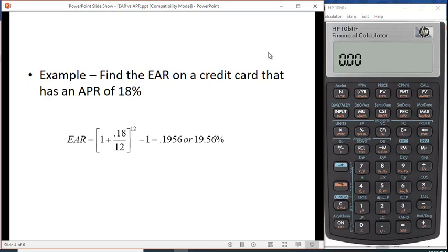This is also the case when you look at things like credit cards. Lots of credit cards have an APR of, for example, 18%—that's 1.5% per month times 12 months. But what's the effective rate that you actually pay? It's (1 + 0.18/12)^12 - 1. Now you can do this with any calculator, but there are functions on the financial calculator that allow you to do it a little more easily.